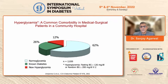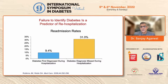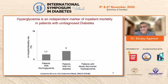Since HbA1c was not done in these patients, we didn't know whether these were missed diagnoses or hyperglycemia that developed during hospitalization. What is important to understand is that if you miss the diagnosis of diabetes during hospitalization, re-hospitalization rates are almost four times as high. Never miss this diagnosis, because these patients will invariably come back with another problem requiring recurrent hospitalizations.